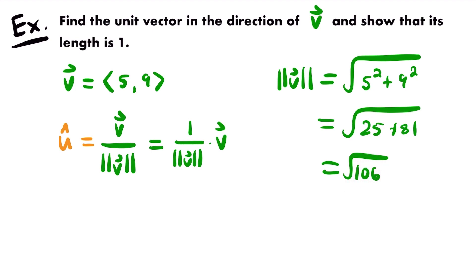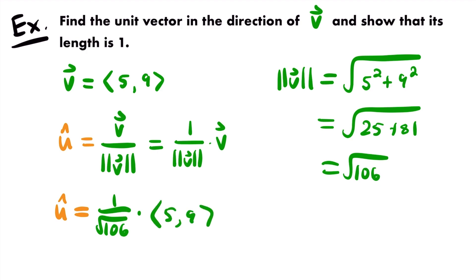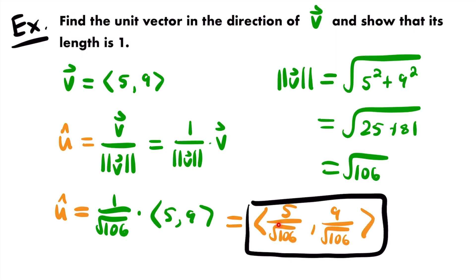The square root of 106 is in its simplest form — it cannot be simplified any further. 106 doesn't have any factors that are perfect squares, so we leave it in this form. Now, to find our unit vector we divide vector v by that magnitude. The unit vector in the same direction as vector v will be equal to 1 divided by the square root of 106 times vector v, which is the position vector 5 comma 9. Multiplying the scalar by both components gives us 5 divided by the square root of 106 and 9 divided by the square root of 106. That is the unit vector in the same direction as vector v.